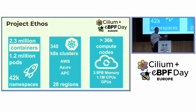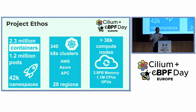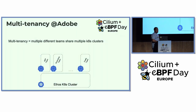At Adobe, developers run their applications on a runtime platform named Ethos, which is a multi-tenant Kubernetes-based platform. In terms of scalability, the platform operates at three main cloud providers and hosts more than one million pods running in 42,000 Kubernetes namespaces, which are owned by application development teams. The multi-tenancy approach at Adobe is very simple: we share multiple physical clusters with multiple teams from different organizations and different projects.